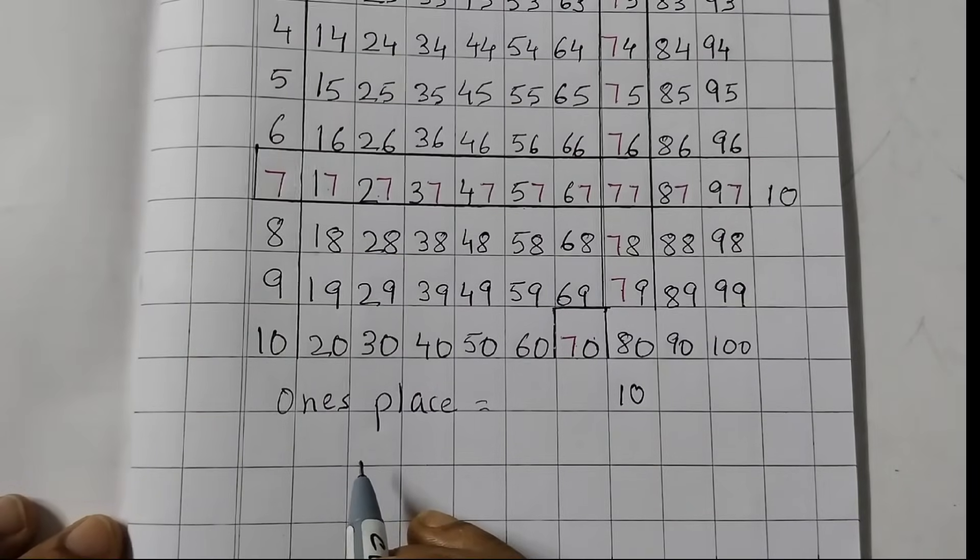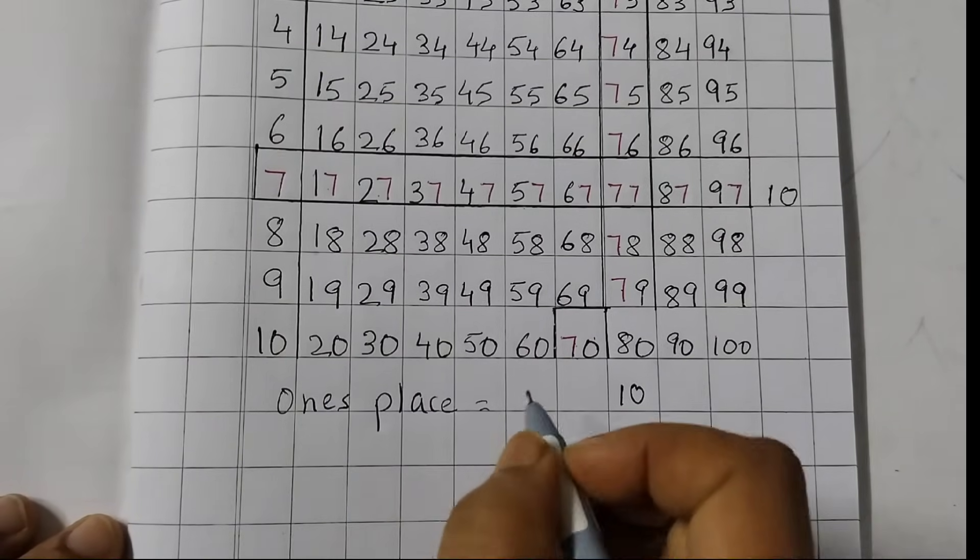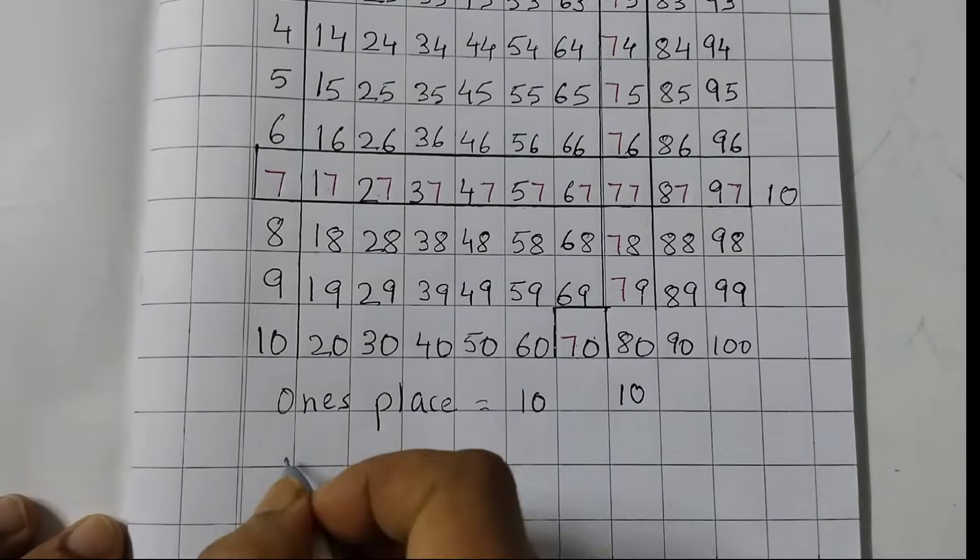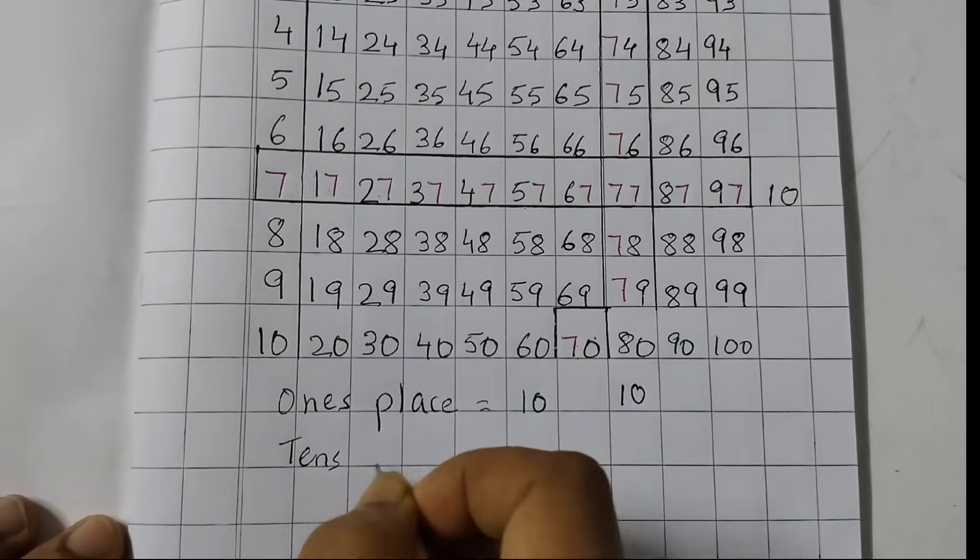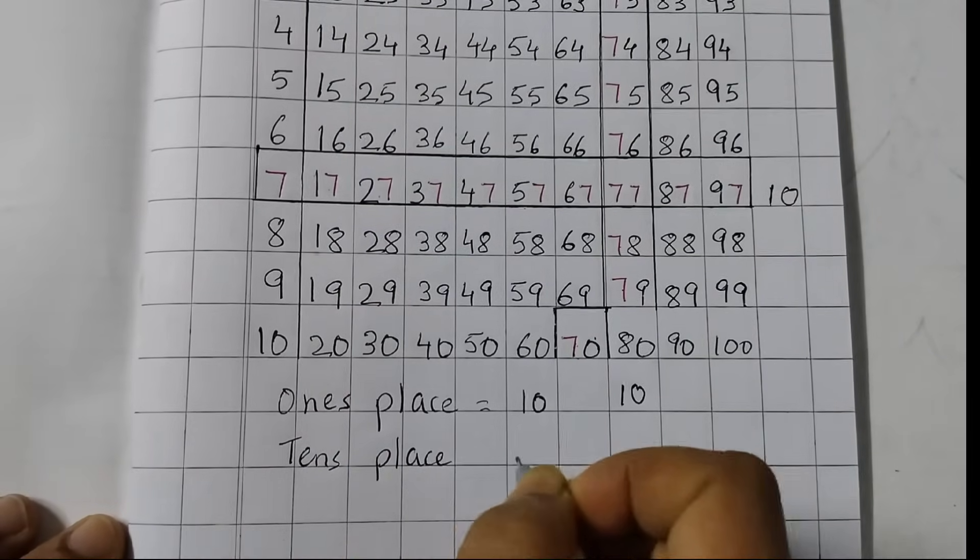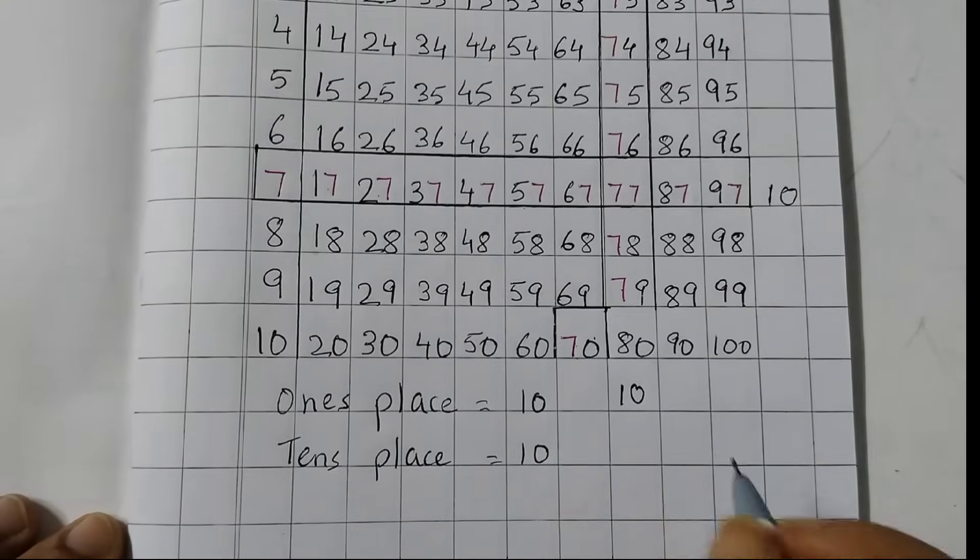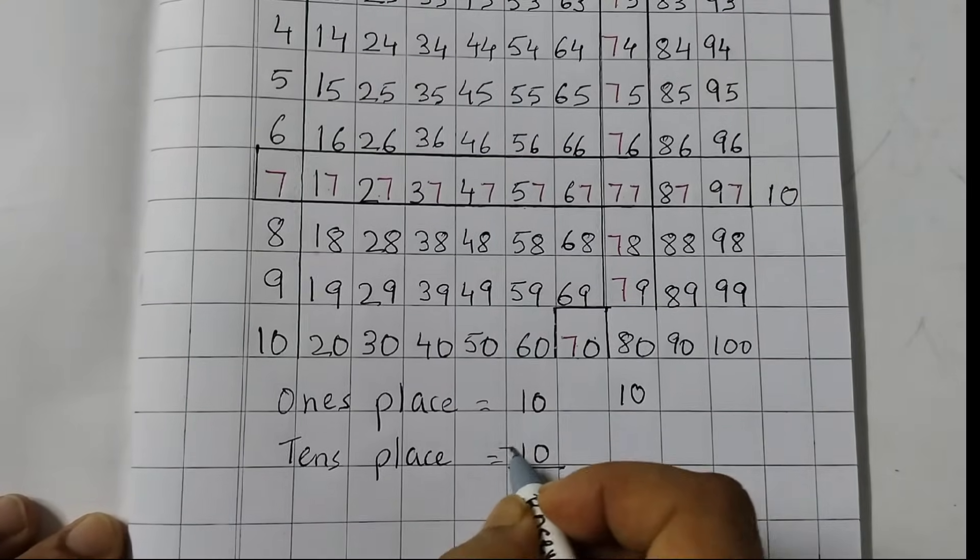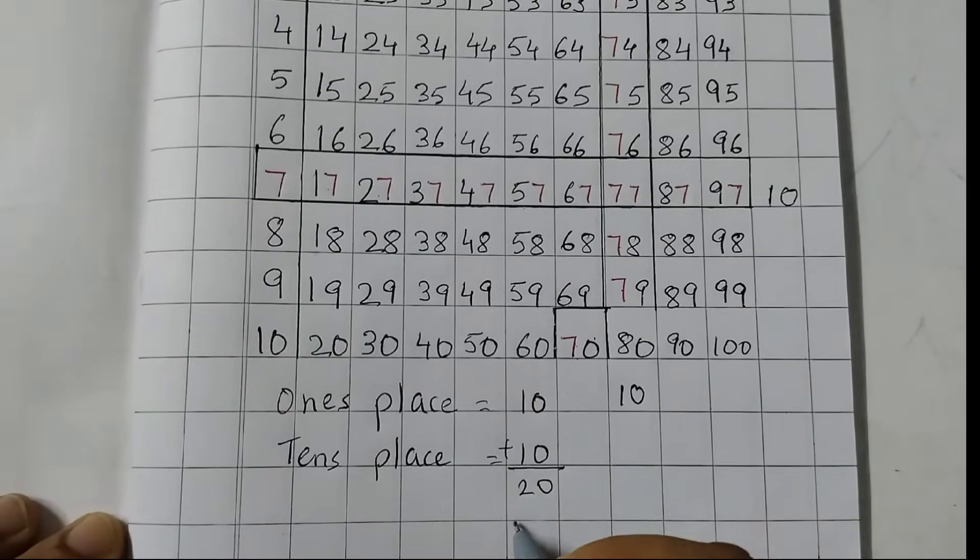So, we can write here. In ones place, the digit 7 appears 10 times. And in tens place, again, the digit appears 10 times. So, in total, it would be 20 times.